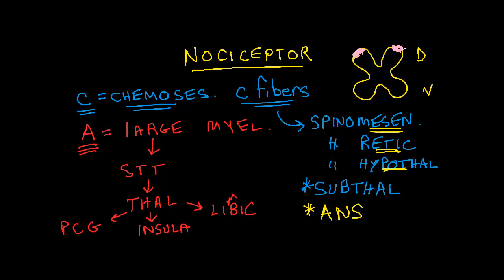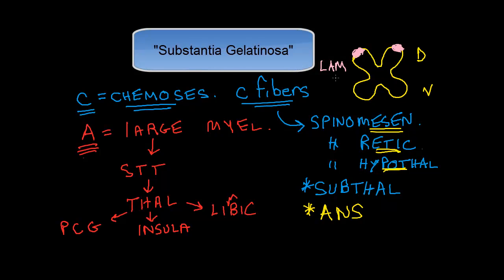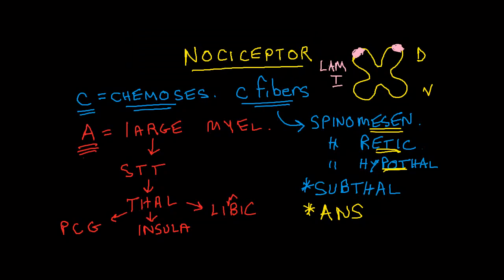And we know that these chemosensitive nociceptors fire into this lamina 1 and also into the area just outside of that known as the substantia gelatinosa. And the literature says these areas of lamina 1 are directly connected to the autonomic nervous system centers in the lower parts of the brain.